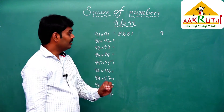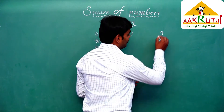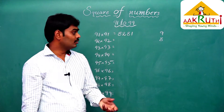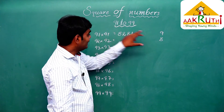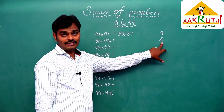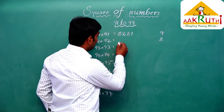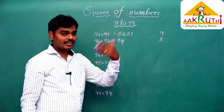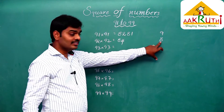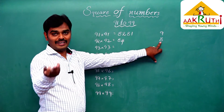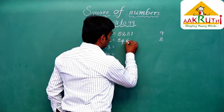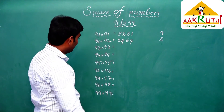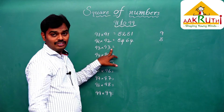Now 92: 92 is 100 minus 8. The first step is 92 minus 8, which is 84. The second step is 8 squared — 8 into 8 is 64. So 92 squared equals 8464.